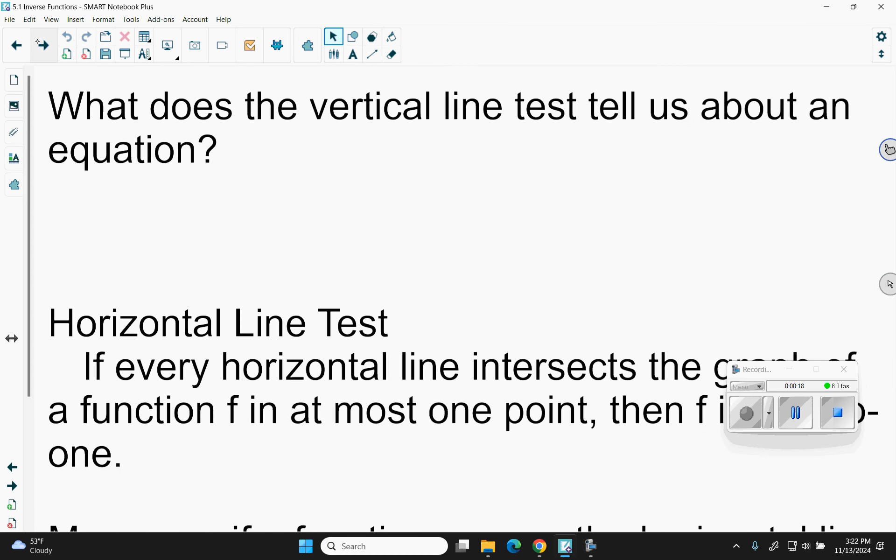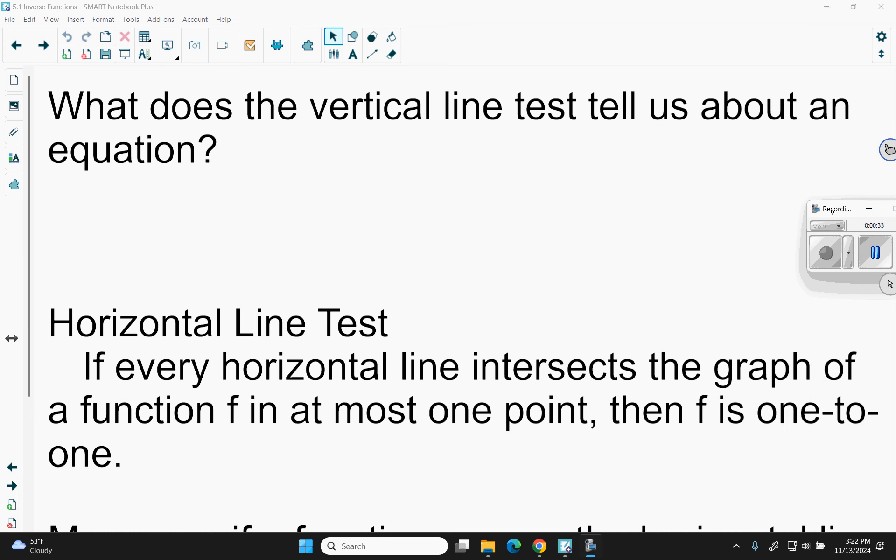One of the biggest things I want you to get from this is remembering that vertical line tests if a function is a function, because all the x's have to be different. But the horizontal line test is what tests if the inverse is also a function. Is it one-to-one? Are all the y's also different?